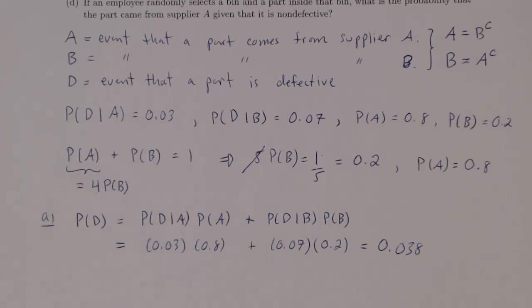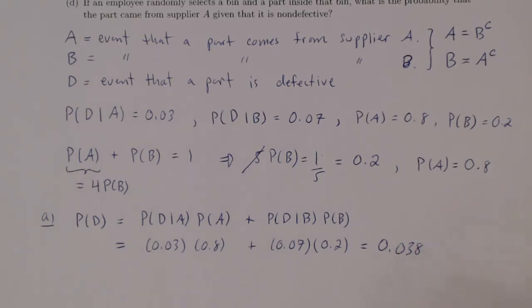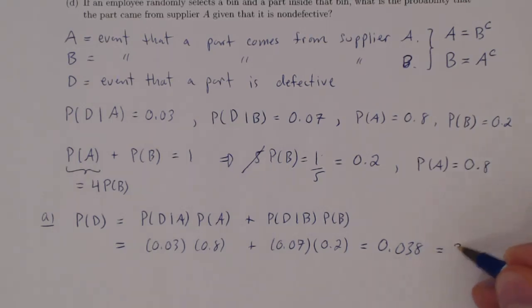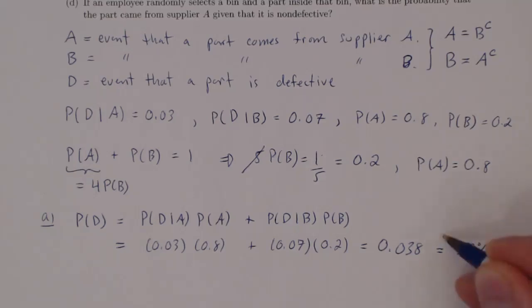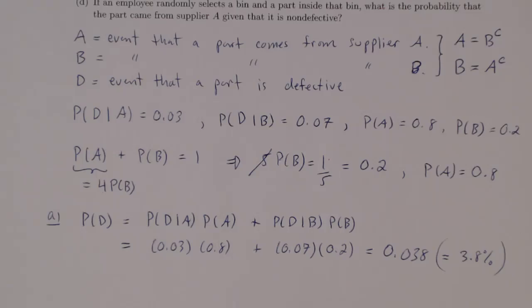So if an employee randomly selects a part, the probability it is defective is 0.038, or 3.8%. That's part A.